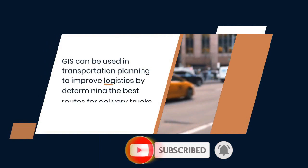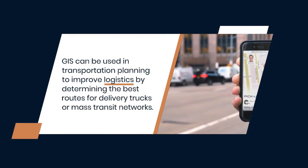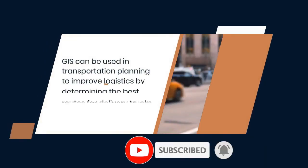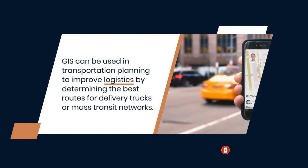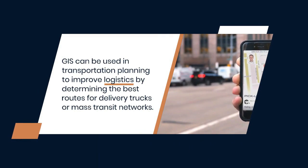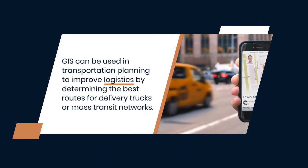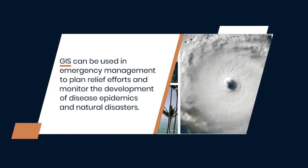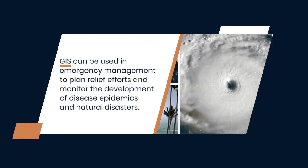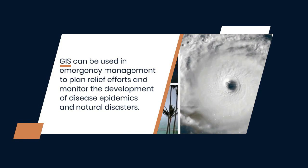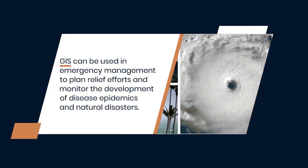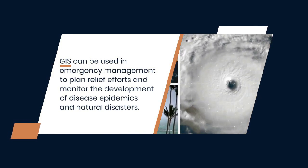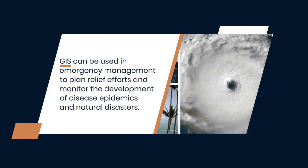GIS can be used in transportation planning to improve logistics by determining the best routes for delivery trucks or mass transit networks. GIS can also be used in emergency management to plan relief efforts and monitor the development of disease epidemics and natural disasters.